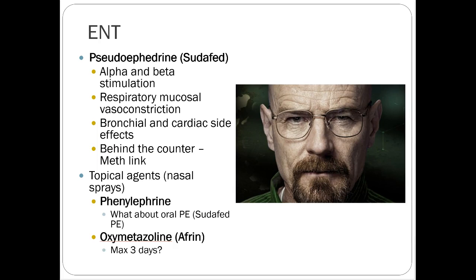For ENT applications with the sympathetic nervous system, we can manipulate it to constrict blood vessels locally. Pseudoephedrine or Sudafed stimulates alpha and beta receptors and does work systemically, but tends to focus in the respiratory and upper mucosal area. It's a stimulant, so not good to take around bedtime. It's been moved behind the pharmacy counter because people use it to manufacture methamphetamine.